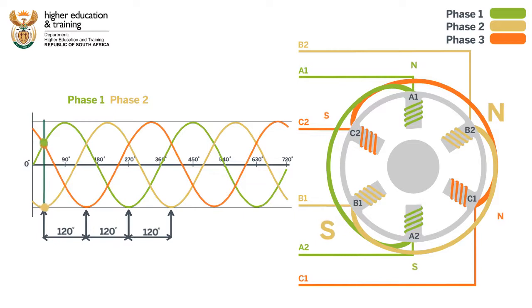If we add the third phase, we again see magnetic poles forming. Because of the 120 degree phase shift between phase 3 and phase 2, these poles form just after those that form on B1 and B2.